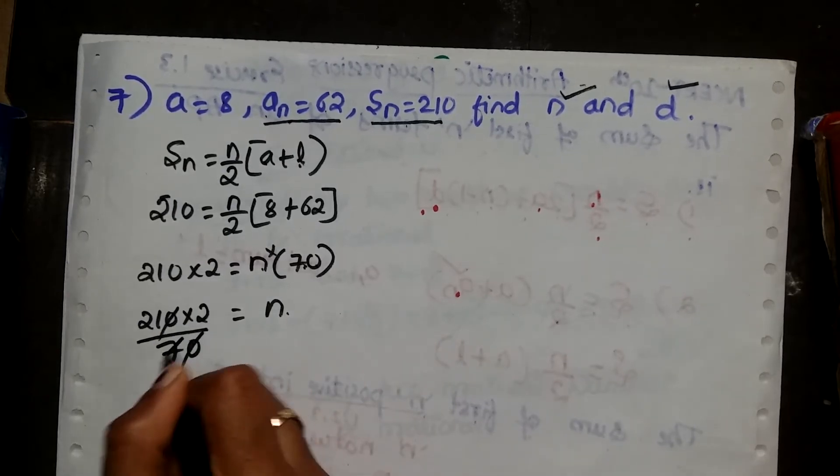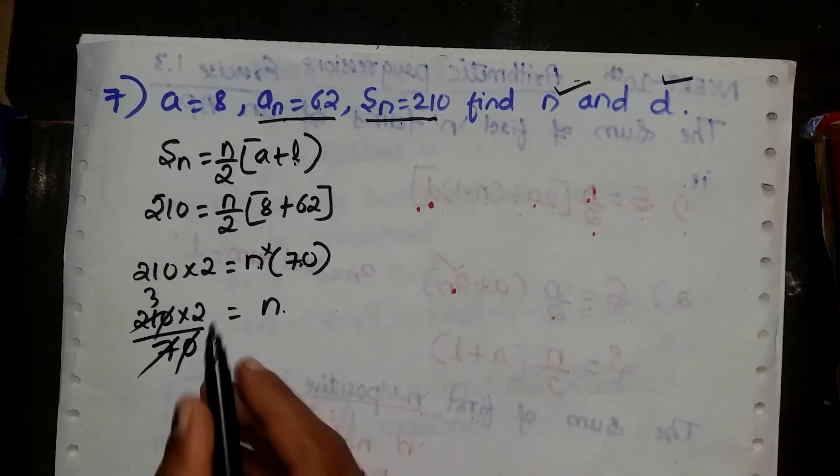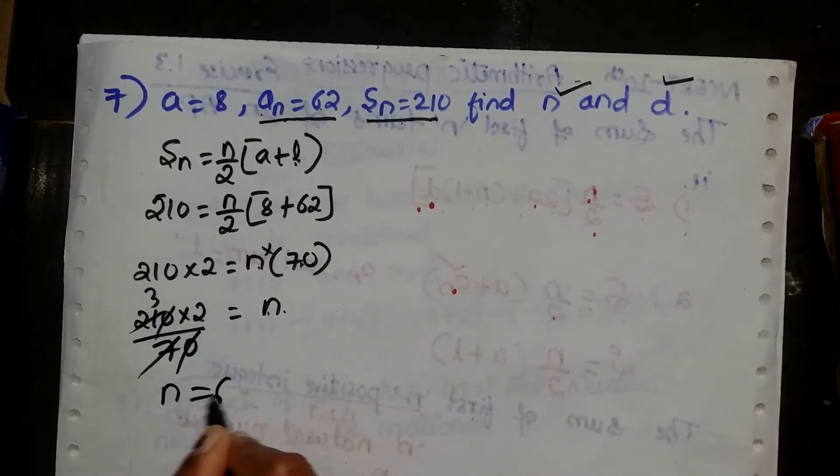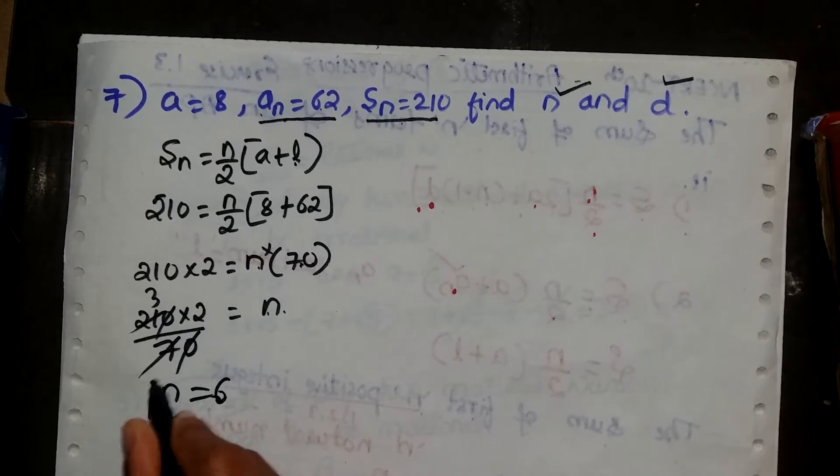So this is 7, 7, 3... that is n equals to 6. The value of n is 6.